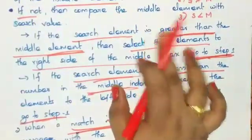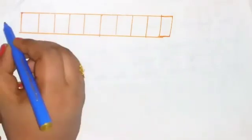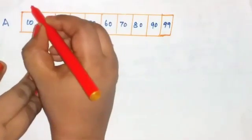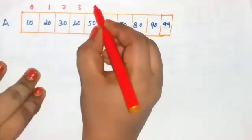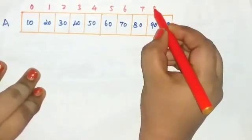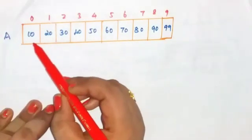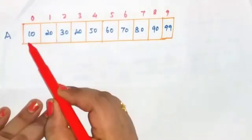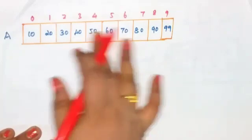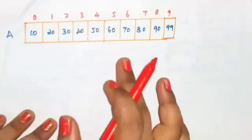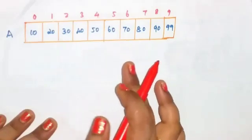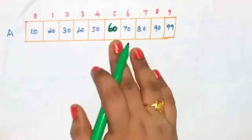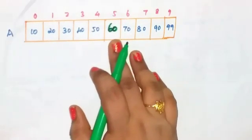Let's see an example. An array is given with index positions 0 through 9. The elements are sorted in ascending order. Now suppose you are going to search for the element 60, and you need to find its index position using binary search.